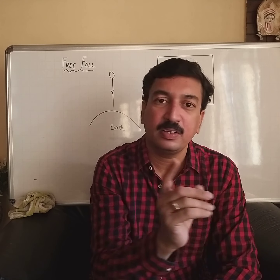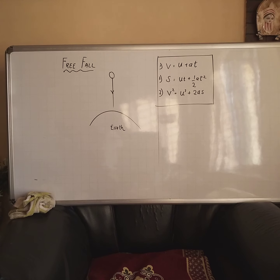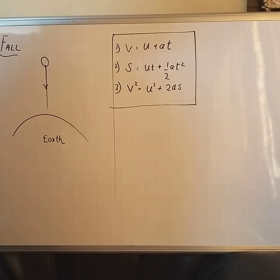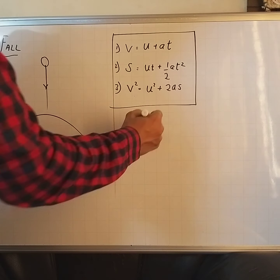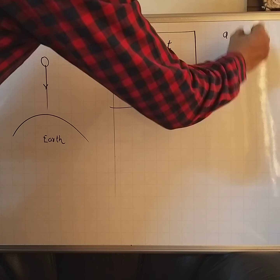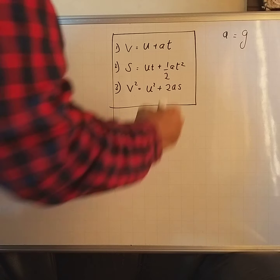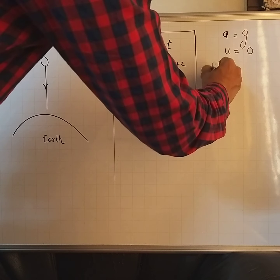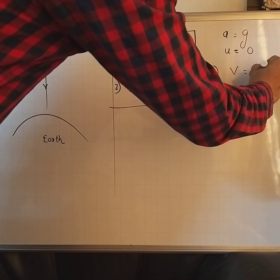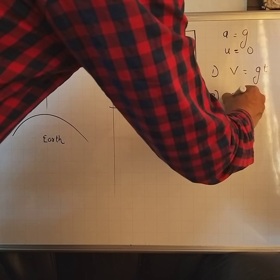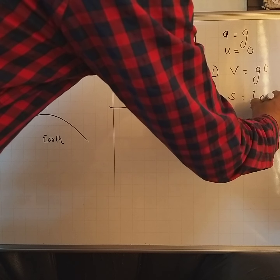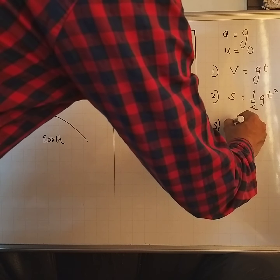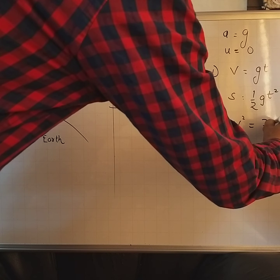What will these 3 equations of motion be? Let's see on the board. For an object freely falling towards the earth, the value of a will be taken as equal to g — positive g — and the value of u will be taken as 0 because initial velocity is 0. Then the first equation changes to v = gt. The second equation becomes s = ½gt². The third becomes v² = 2gs.